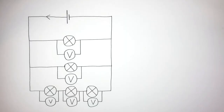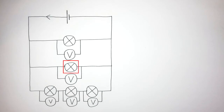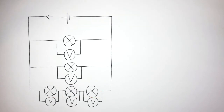Here is a parallel circuit containing a cell, one filament lamp in the first branch, another filament lamp in the second branch, and three filament lamps in the third branch. The potential difference of this cell is nine volts, meaning there is nine joules of energy per coulomb of charge.